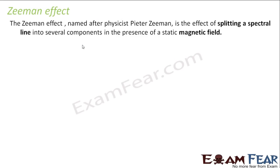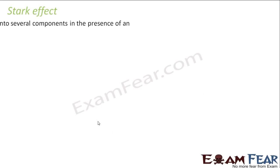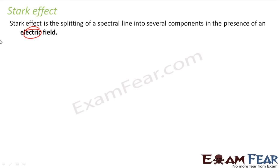The Zeeman effect, named after the physicist Zeeman, is the splitting of spectral lines into several components in the presence of a magnetic field. Without a magnetic field you get a single spectral line; the moment you apply a magnetic field, the lines split into multiple components. Similarly, the Stark effect is the same phenomenon but in the presence of an electric field. These are things Bohr could not explain.